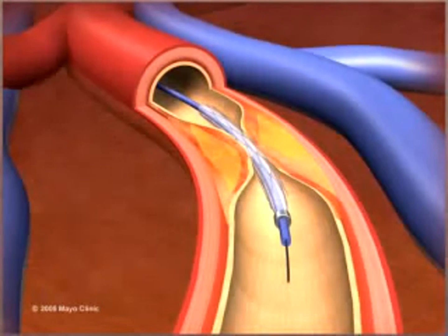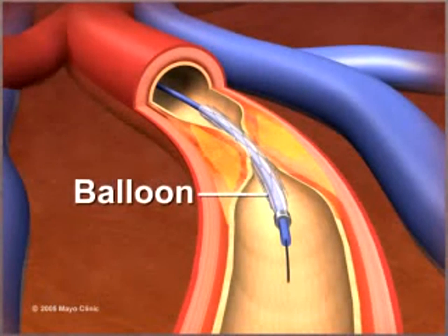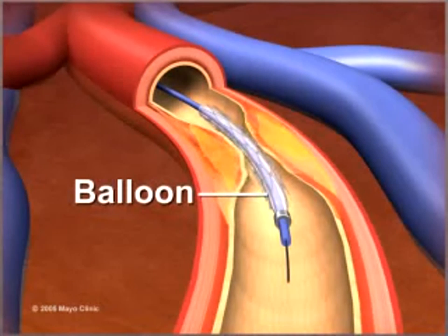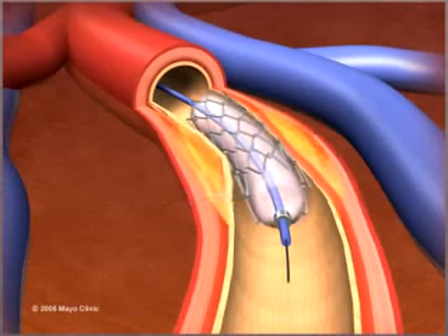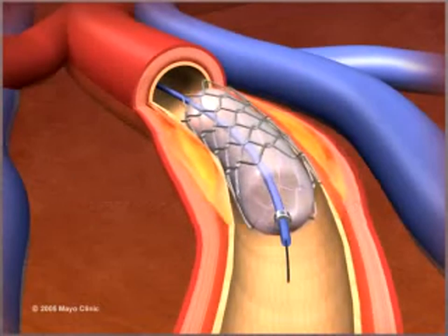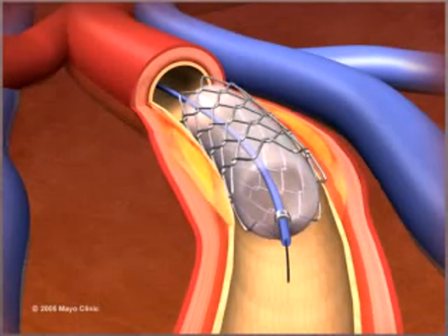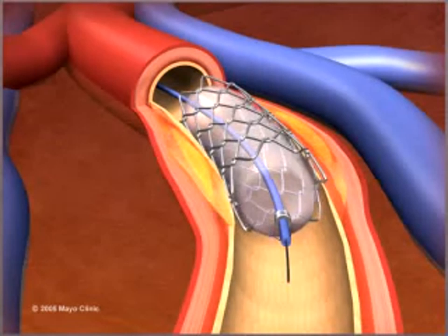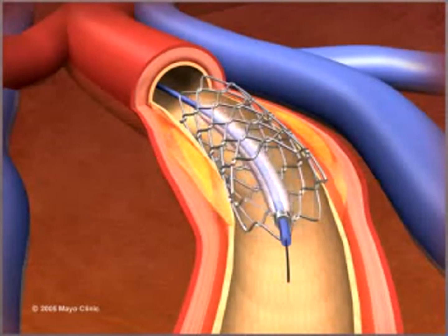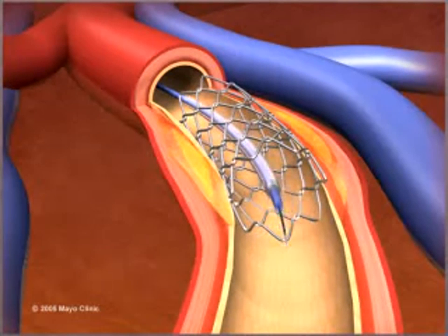When it reaches the narrowed area, a small balloon on its tip is inflated to reopen the artery and flatten the blockage into the artery wall, while at the same time stretching the artery open to increase blood flow to the heart. Both catheters and the wire are then withdrawn.